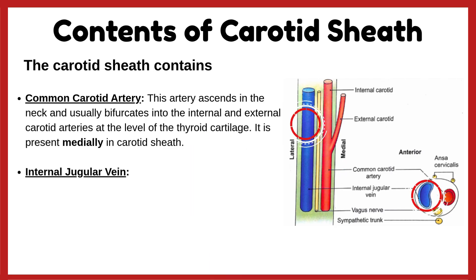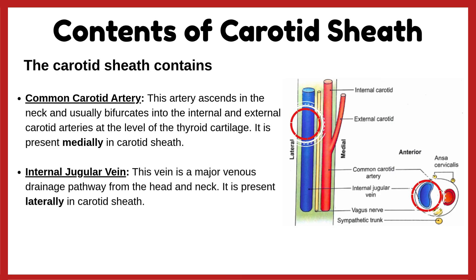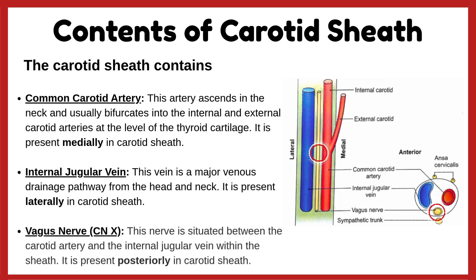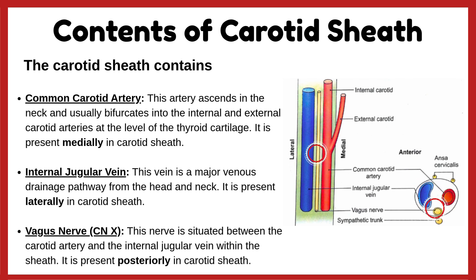The internal jugular vein is a major venous drainage pathway from the head and neck, and is present laterally in the carotid sheath. The vagus nerve is situated between the carotid artery and the internal jugular vein within the sheath, and is present posteriorly.